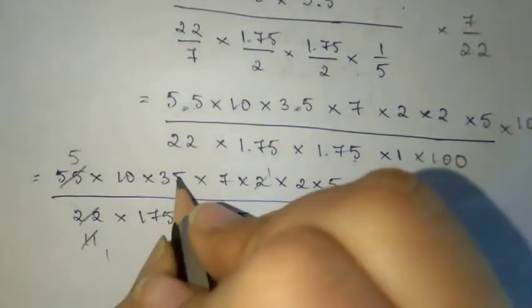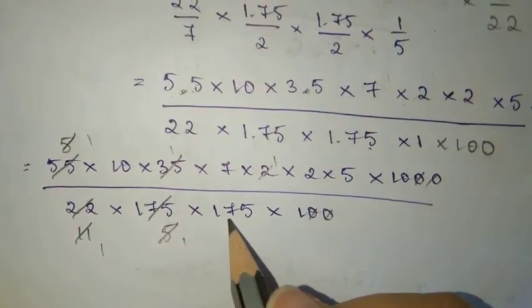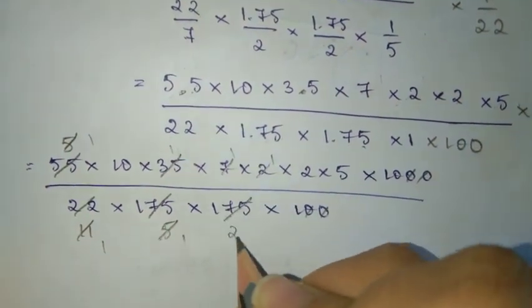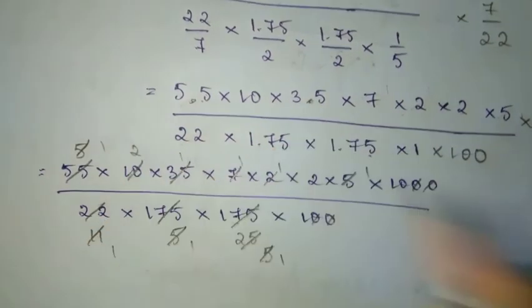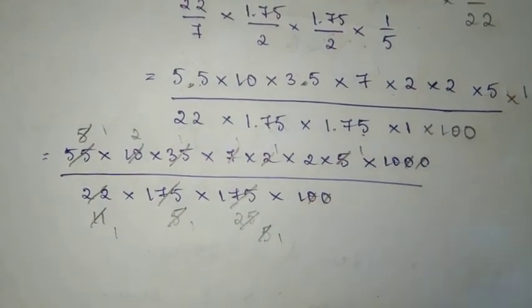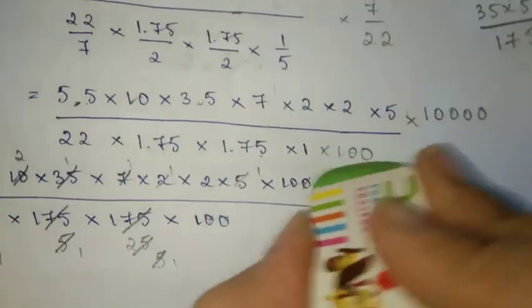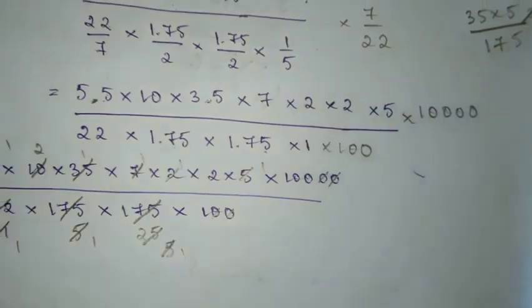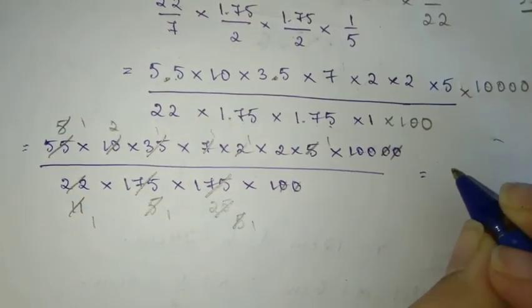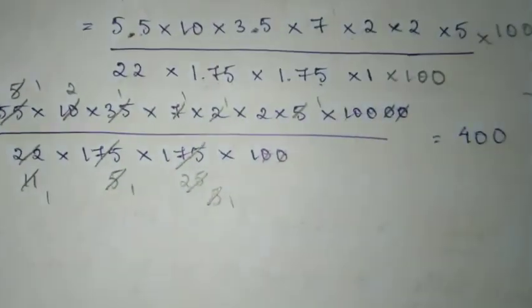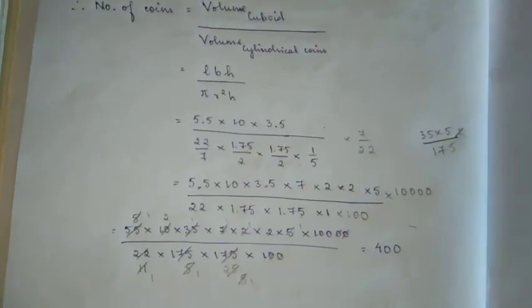So we get 55 into 10 into 35 in the numerator. In the denominator, we have 22 into 175 into 175 into 1. Now we do normal calculations: 35 into 5 is 175, 2 into 2 is 4, 4 into 100 is 400. So finally, the number of coins is equal to 400. That will be the final answer.